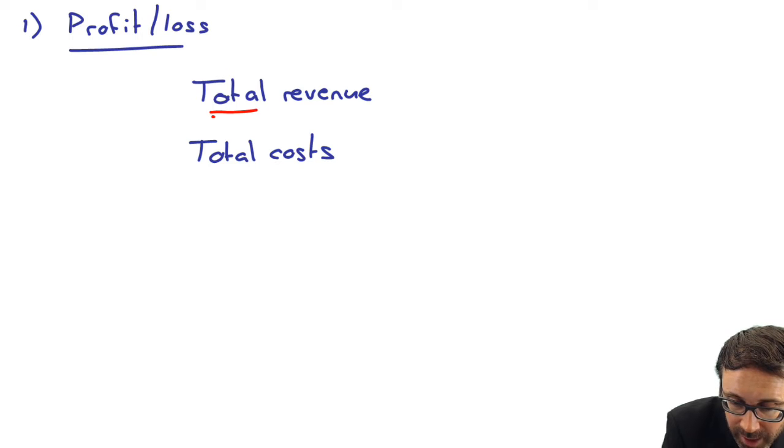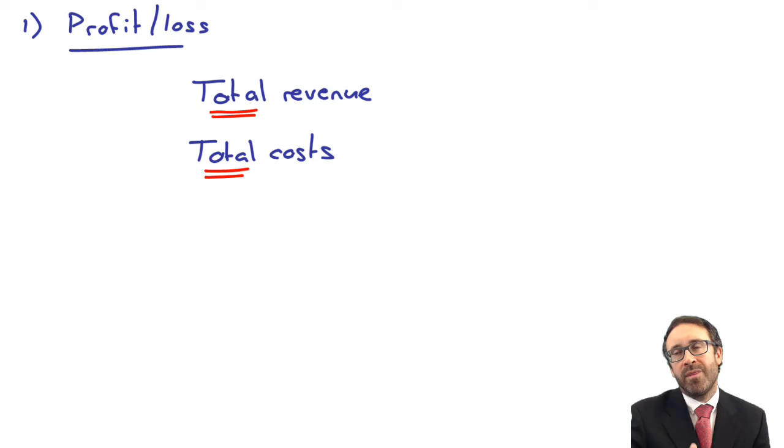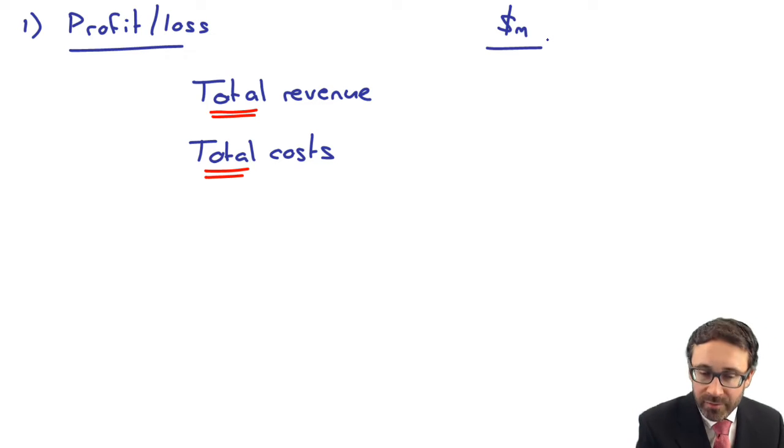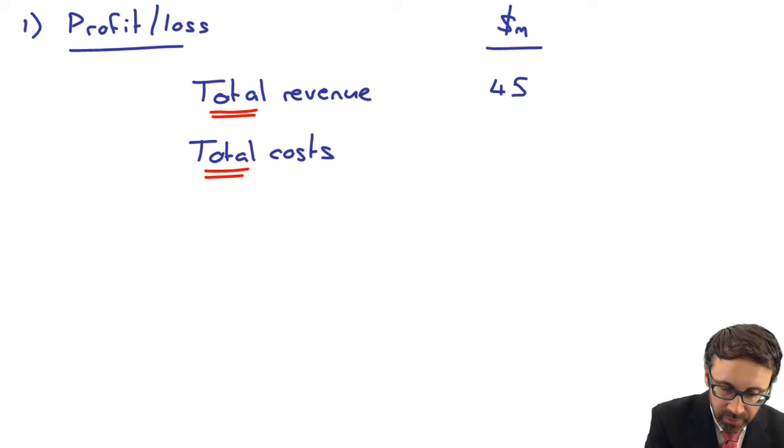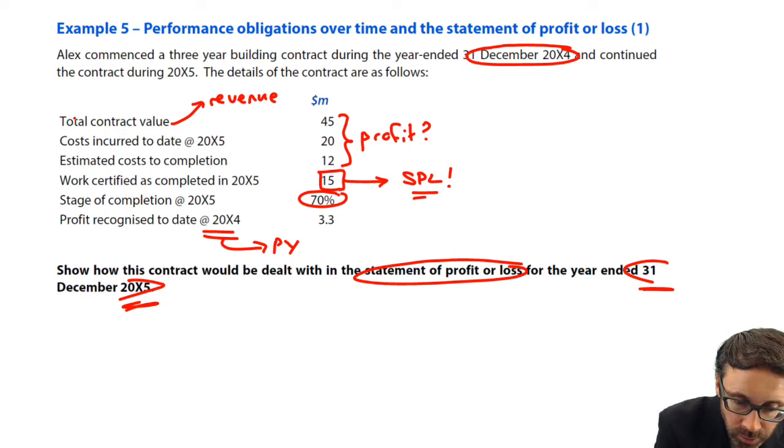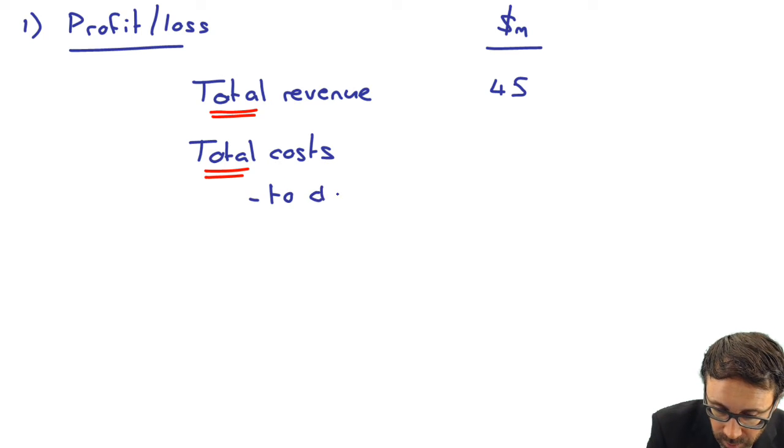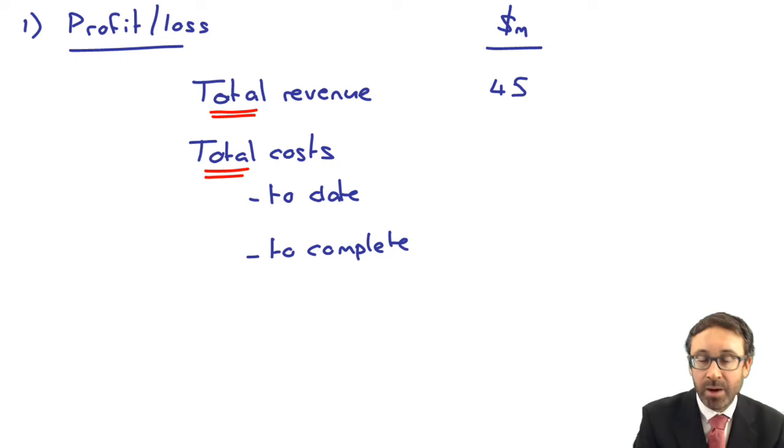But we're looking at it in total because then if we have a profitable contract, we can then split that profit over the years of the contract based upon our stage of completion. If it's loss making, we can do something ever so slightly different based upon the accounting principles of prudence. So here, what have we got? We're looking at millions of dollars. Well, the total revenue to date was 45 million. So if you're looking for your numbers, you've got it there. Total contract value, total revenue is 45 million. And then when you're looking at your total costs, you've got to be careful here because we need to look at our costs to date and our cost to complete.